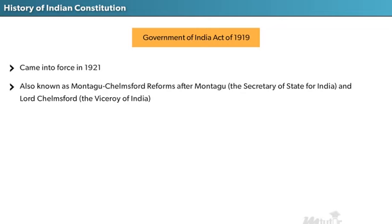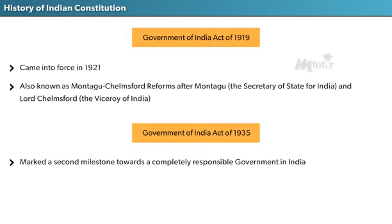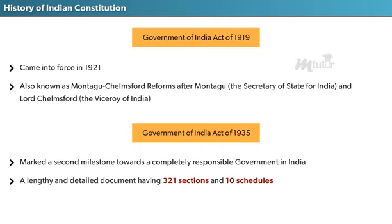The next one is the Government of India Act of 1935. This Act marked a second milestone towards a completely responsible government in India. It was a lengthy and detailed document having 321 sections and 10 schedules.